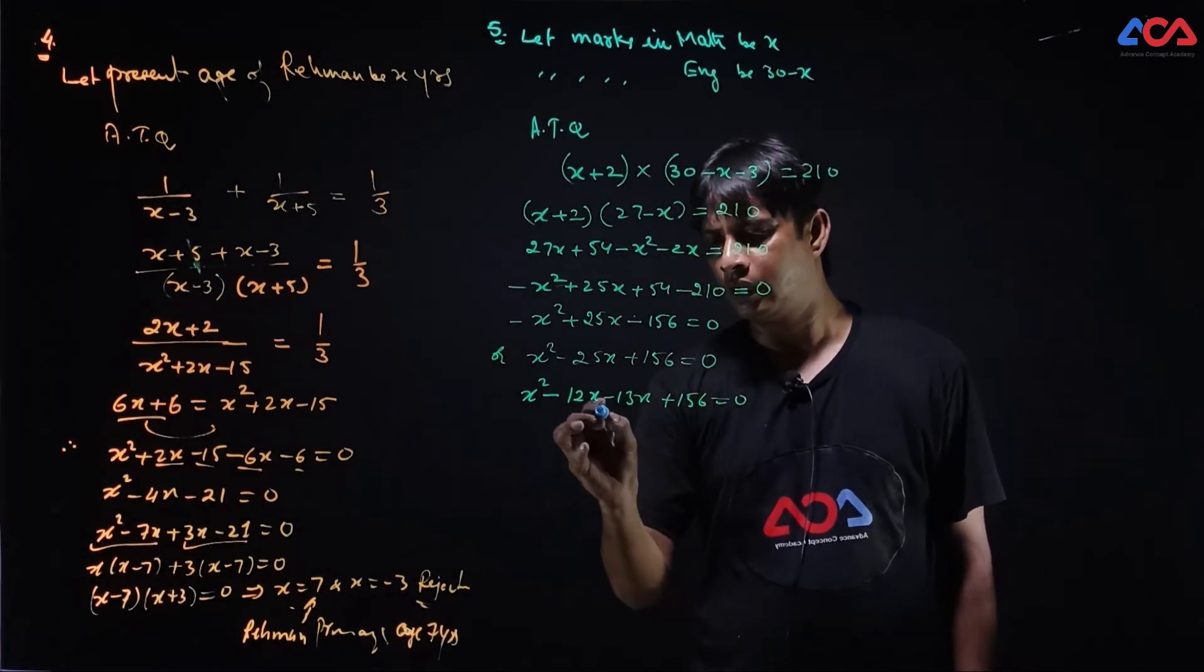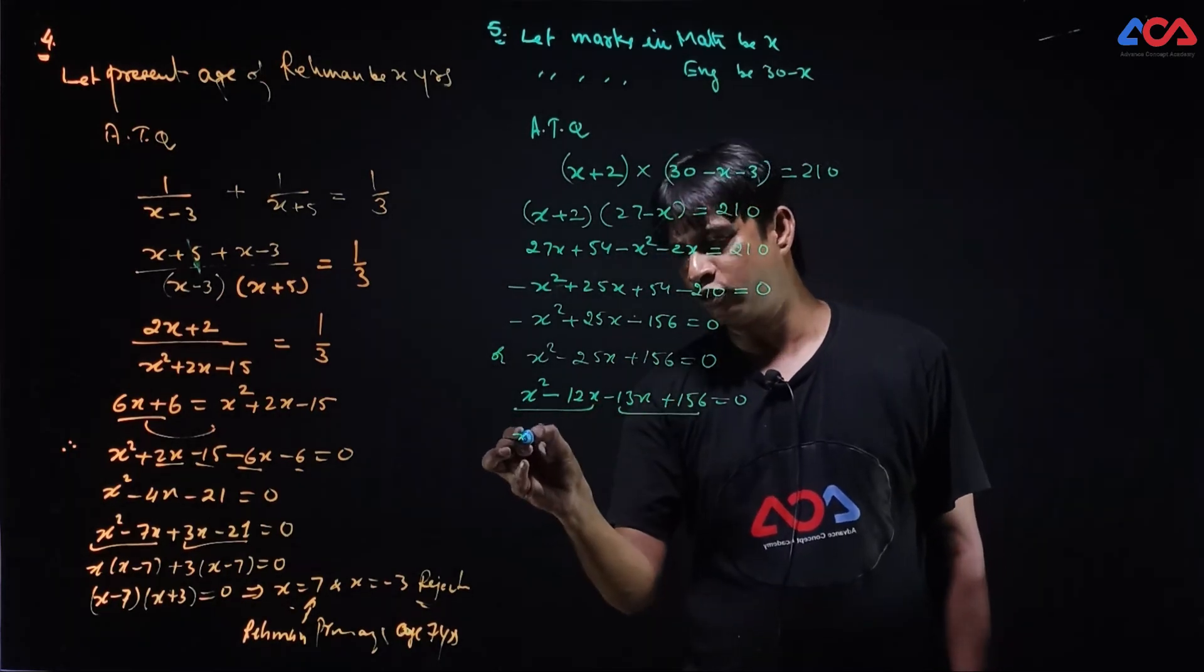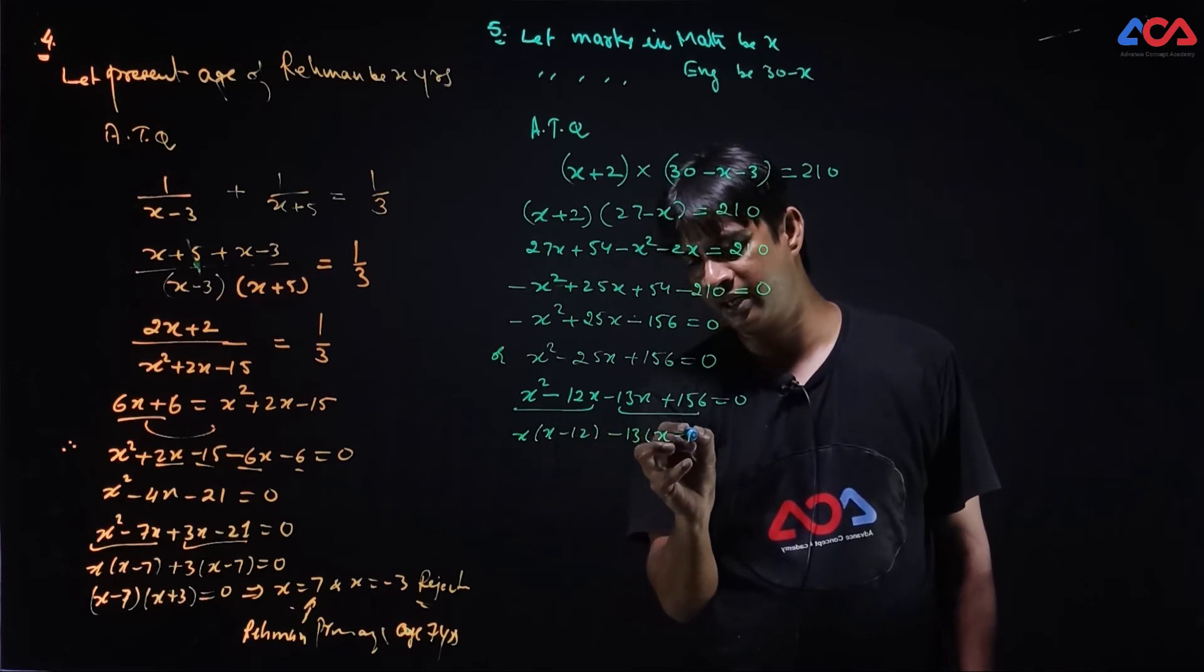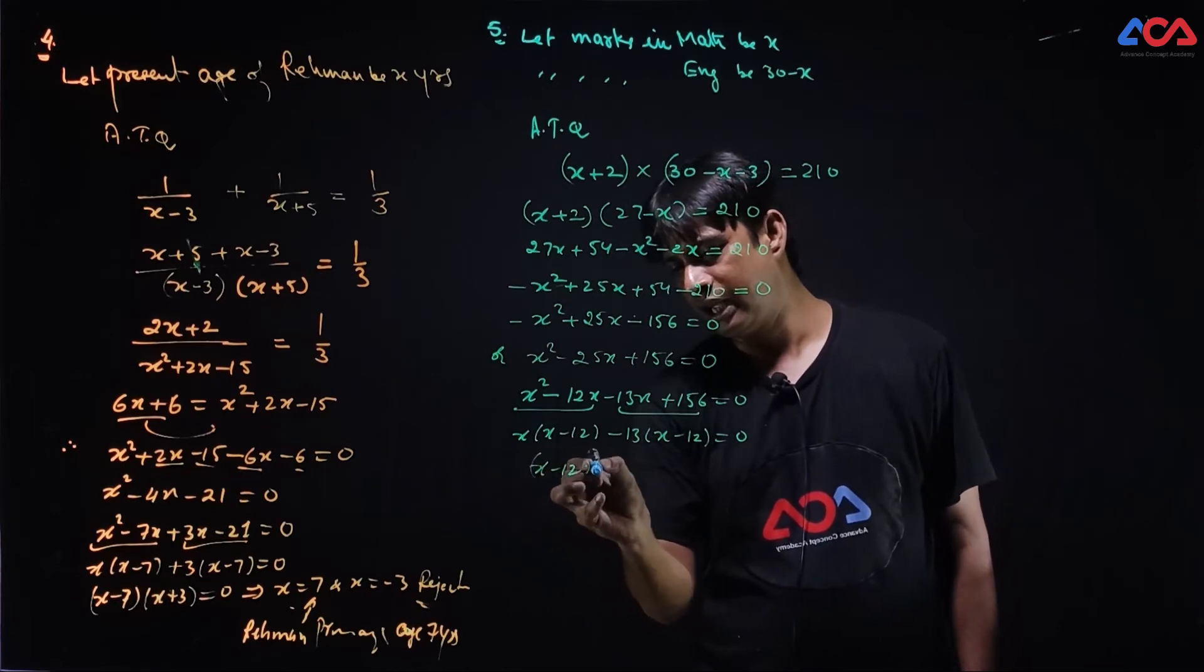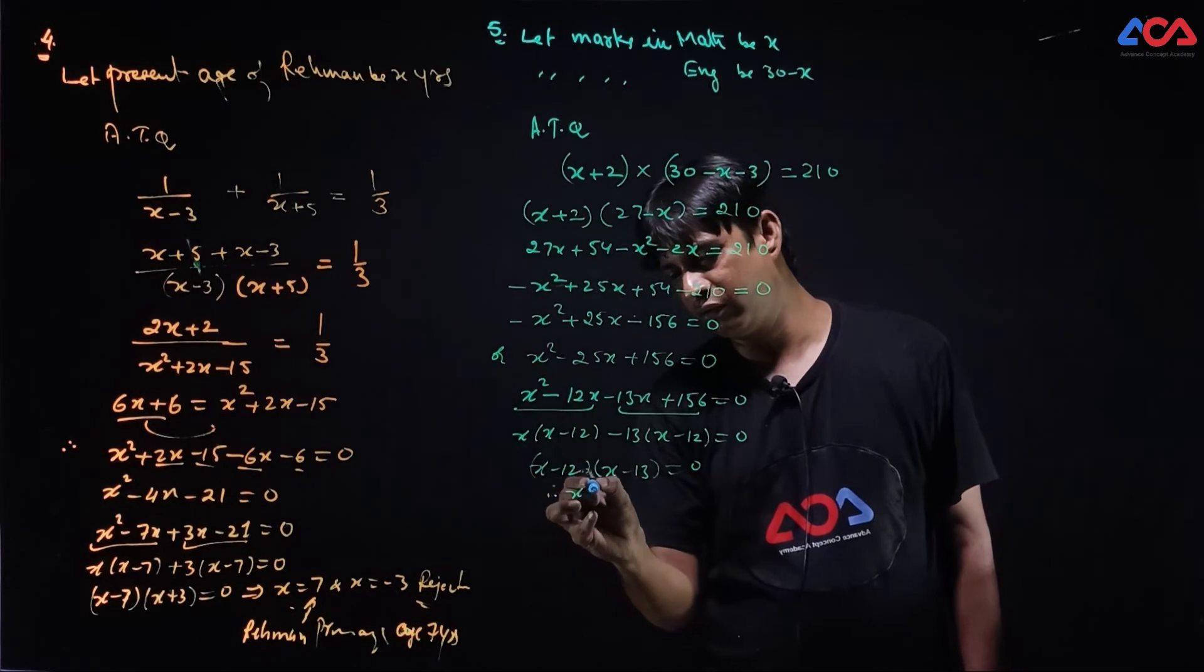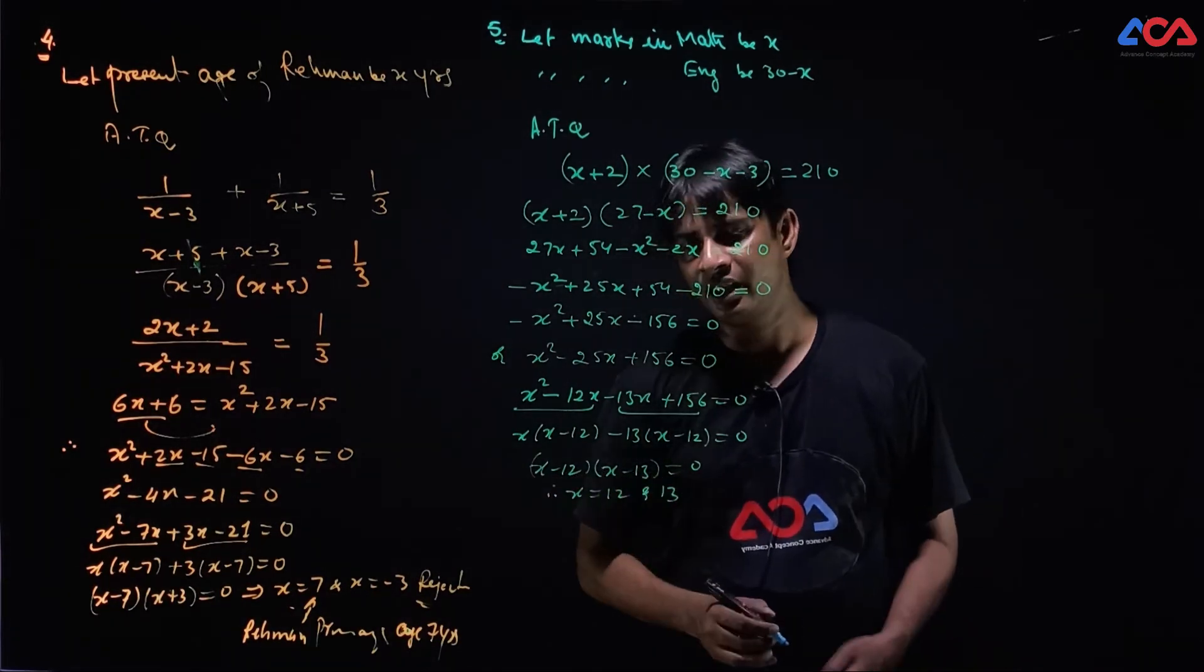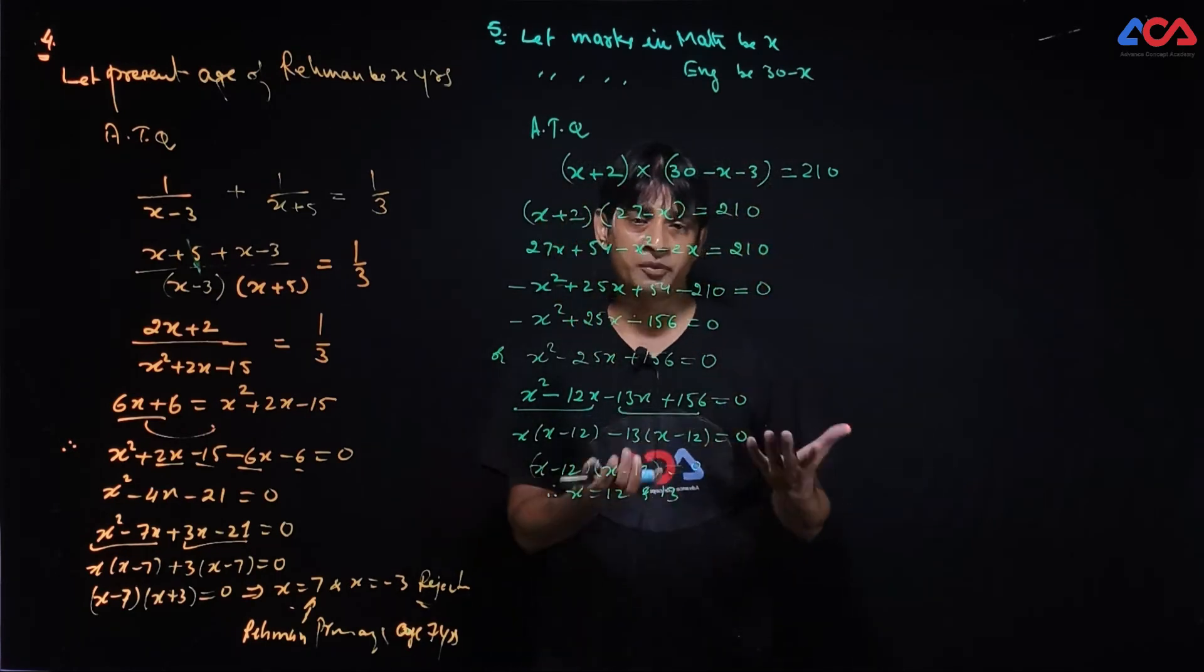This has been taught you. We don't explain it every time. Here x common, x minus 12. Minus of 13 common, x minus 12 which is equal to 0. Then x minus 12, x minus 13 which is equal to 0. So x's value is 12 and 13. In mathematics we will have 12 marks or 13. So in English we will have two cases.